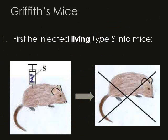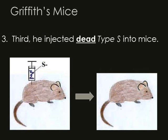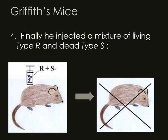Reviewing the results: first, he injected living type S into the mouse — the mouse died. Next, he injected living type R bacteria — the mouse lived. Thirdly, he injected dead type S — the mouse lived. Finally, he injected a mixture of living type R and dead type S. When these were independently injected, the mouse lived, but when these two were mixed, the mouse died.